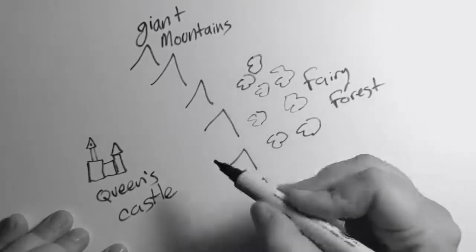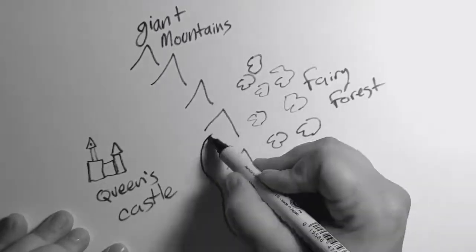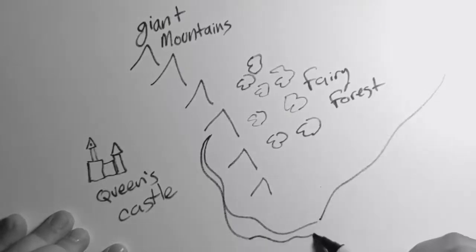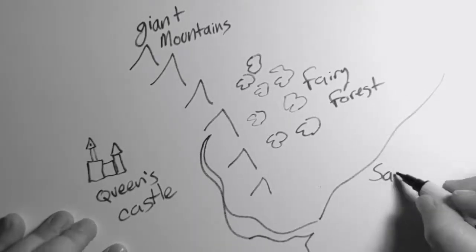Let's make a river that starts in the mountains and flows all the way down to the sapphire sea where the mermaids live.